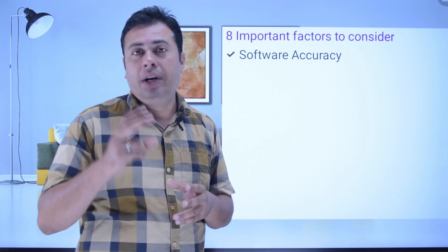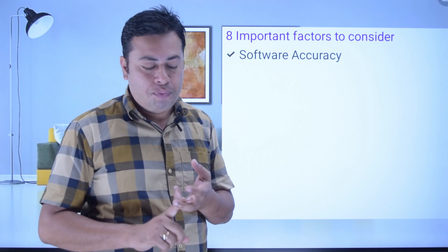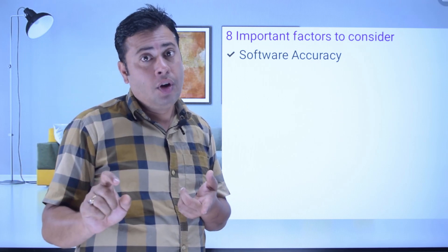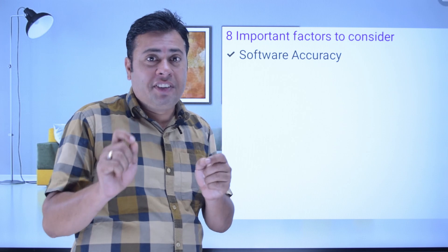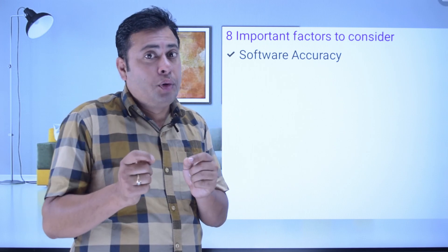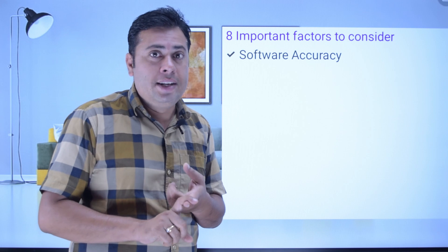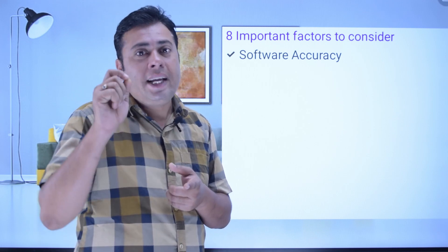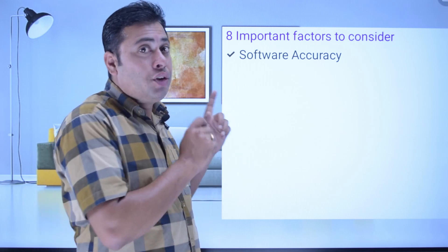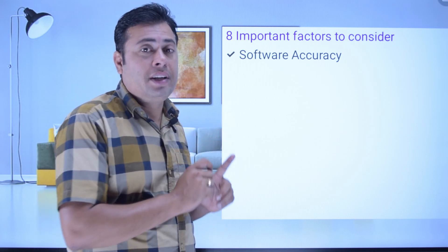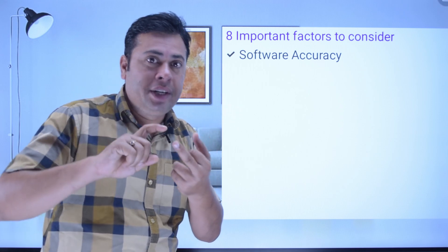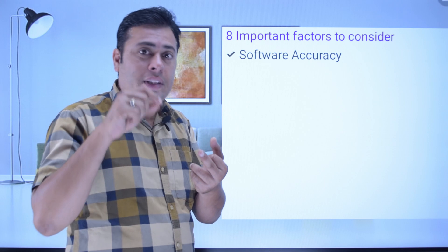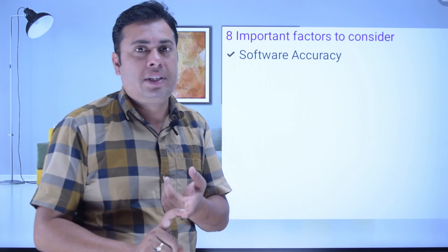How can you check accuracy? There are only two ways. First, you can take your own DMIT report from that company before buying the software, or take a free trial version, and see whether the report is accurate. Second, take the DMIT training first — once you take the training, you will come to know the accuracy of the DMIT software.